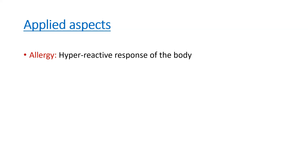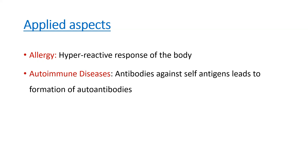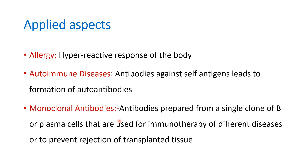Some applied aspects of humoral immunity: First, allergy — if antibody responses are hyperreactive, allergy results. Second, autoimmune diseases — lymphocytes are normally programmed to ignore self-antigens, but when antibodies are produced against self-antigens, auto-antibodies form and cause autoimmune diseases. Third, monoclonal antibodies — antibodies produced from a single clone of B cells or plasma cells, used for immunotherapy of different diseases and to prevent rejection of transplanted cells.